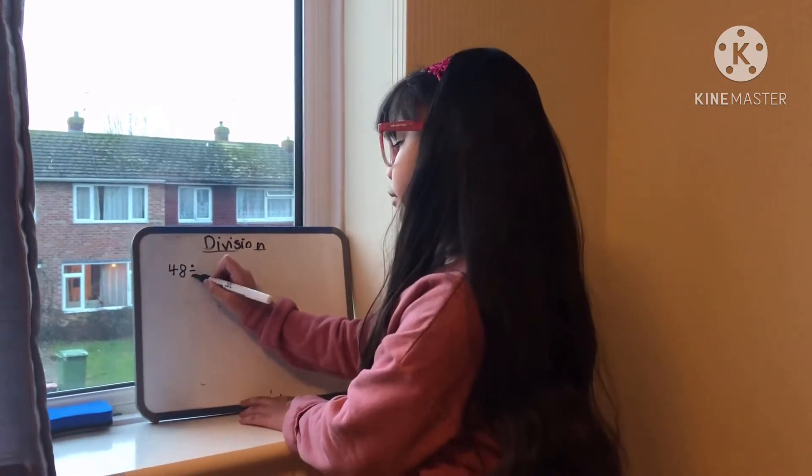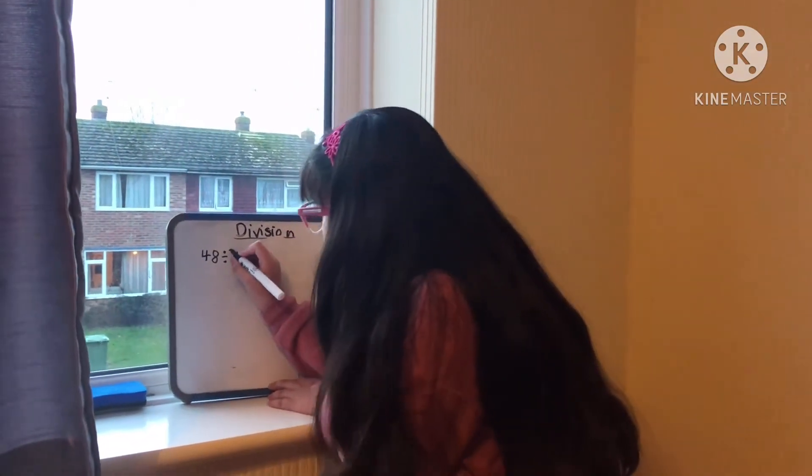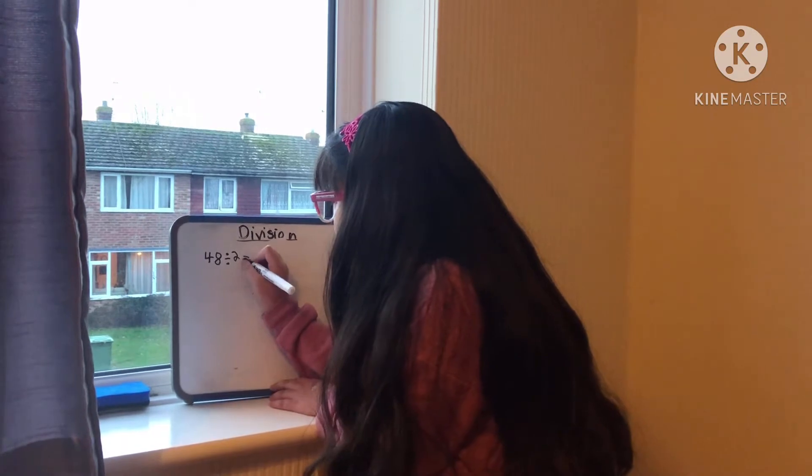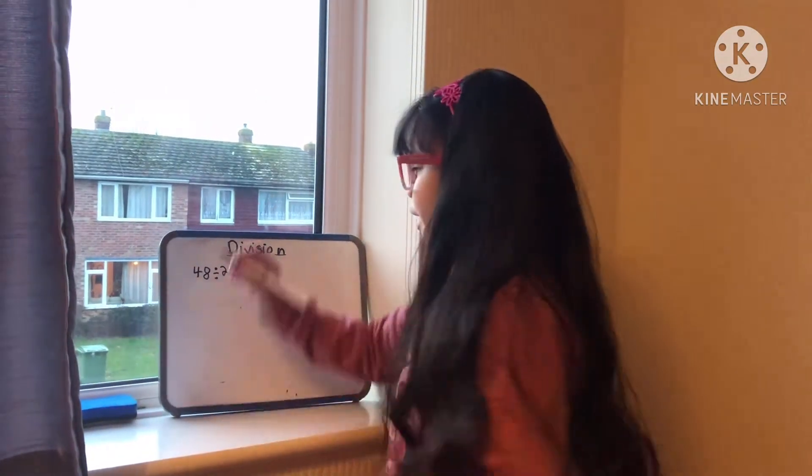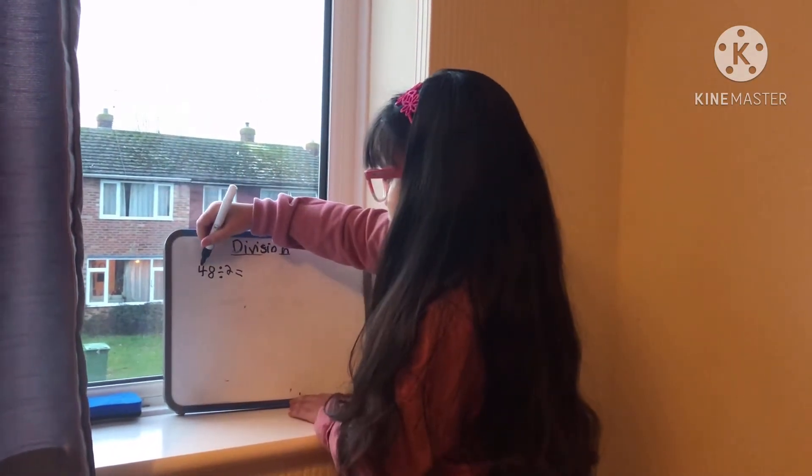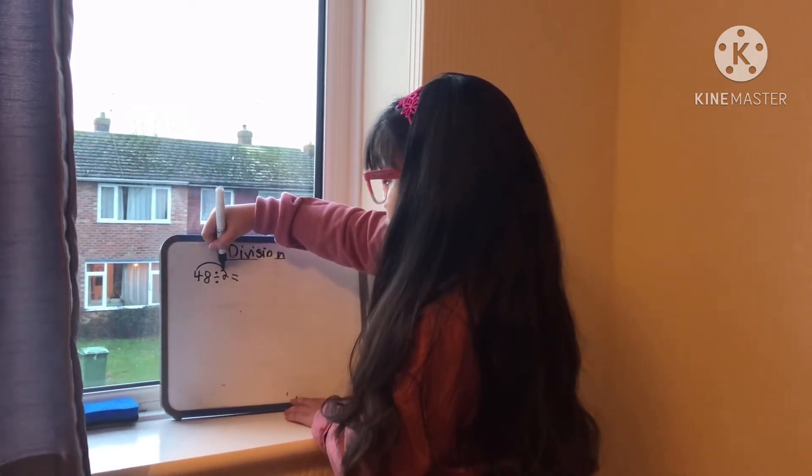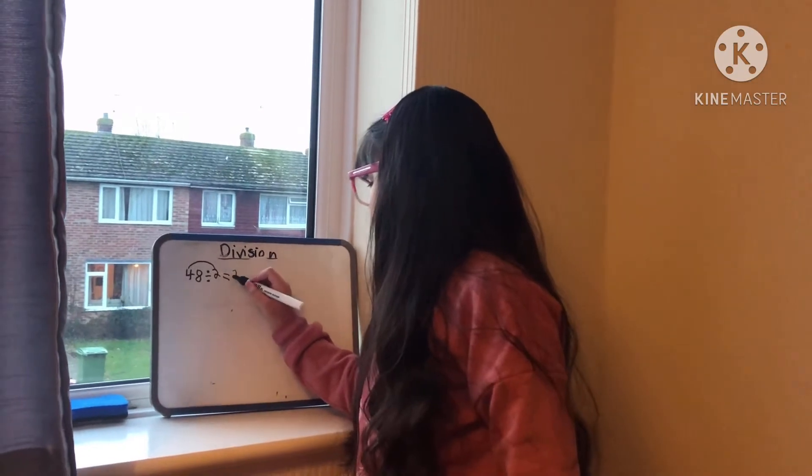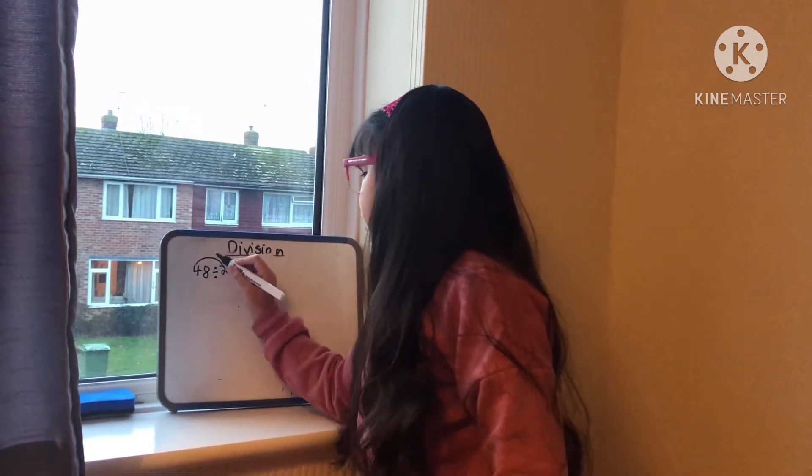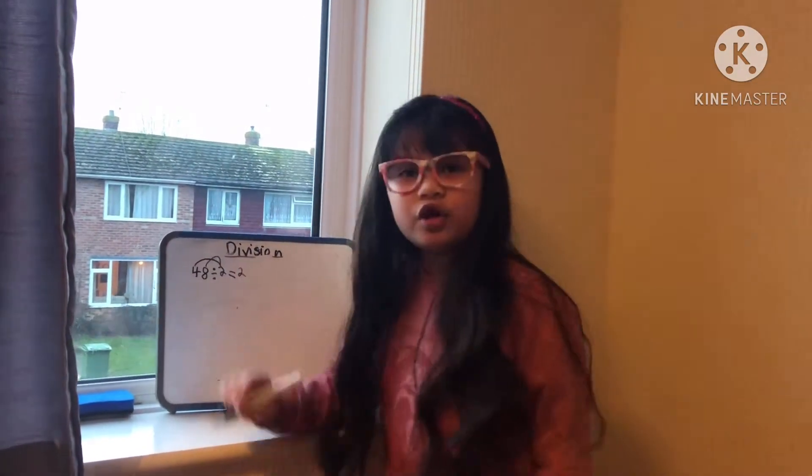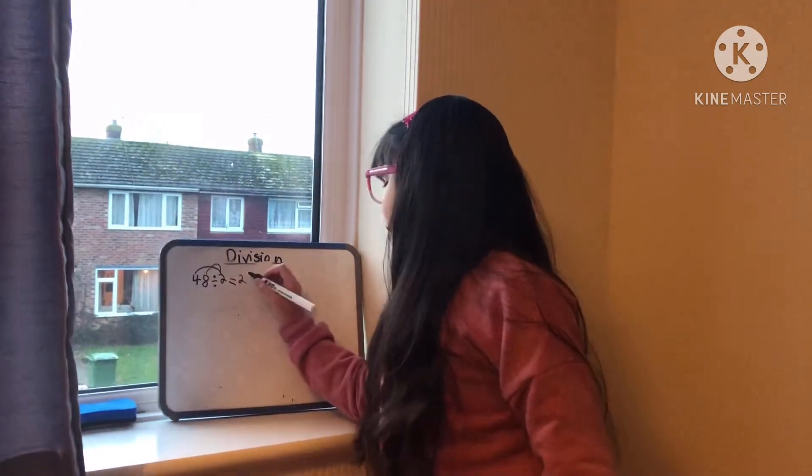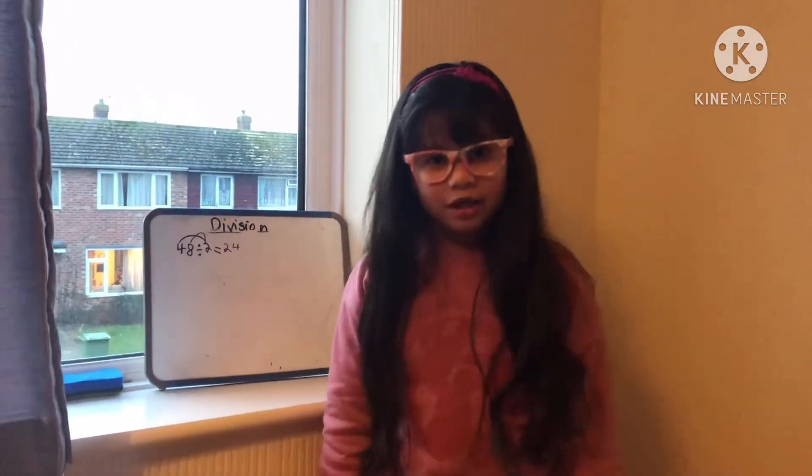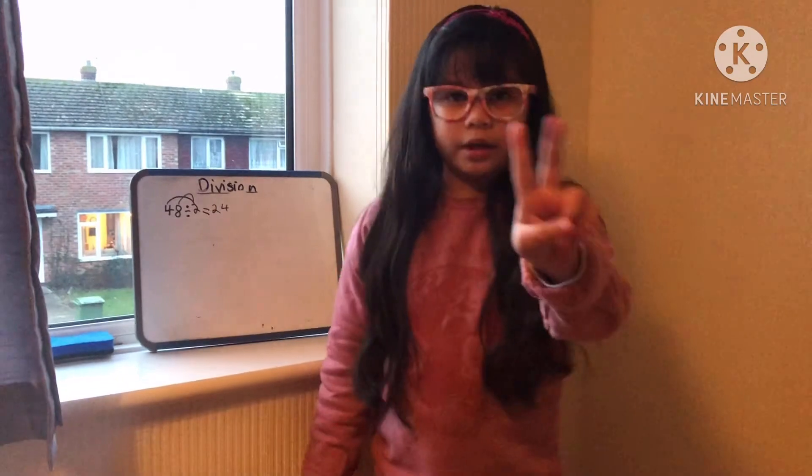You can pause the video if you want to. Okay, so how we do it: we start on the tens column, 4 divided by 2 is 2, and 8 divided by 2 is 4. So our exact answer is 24.